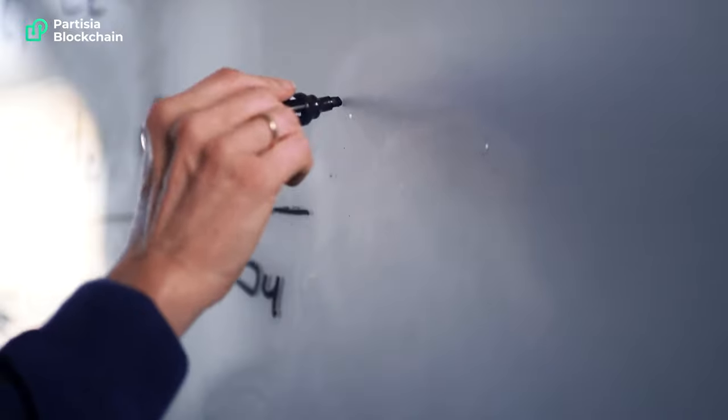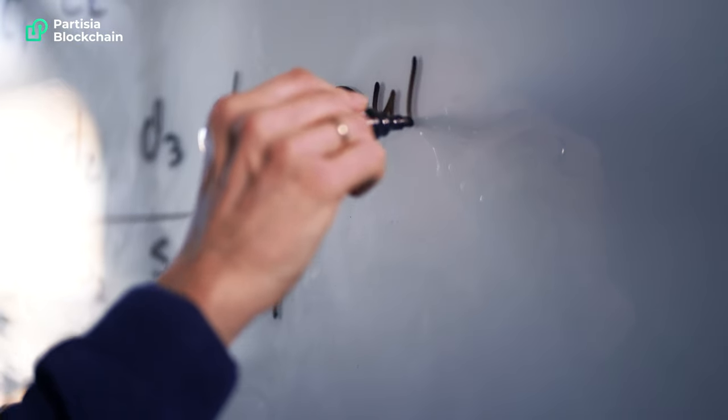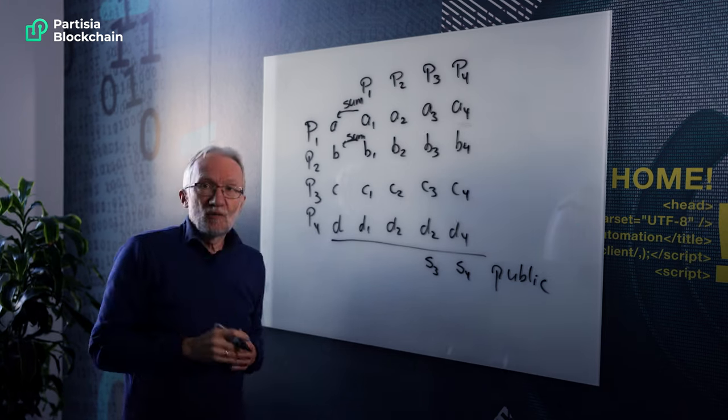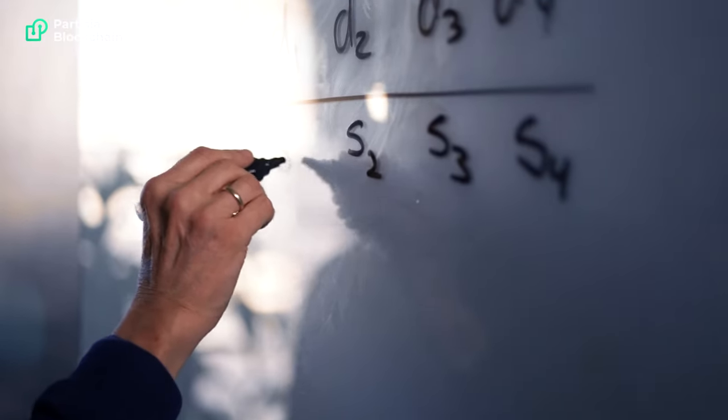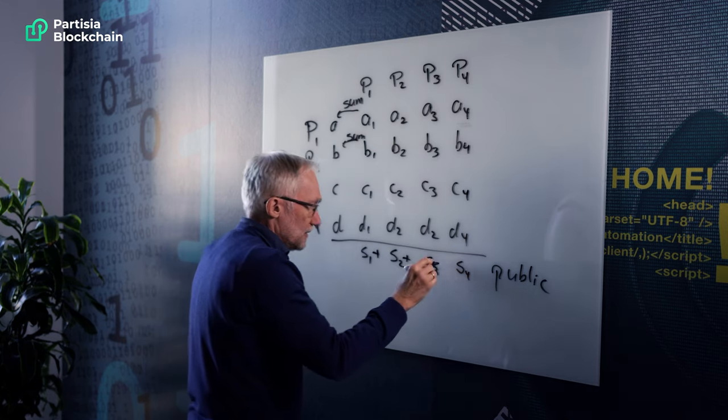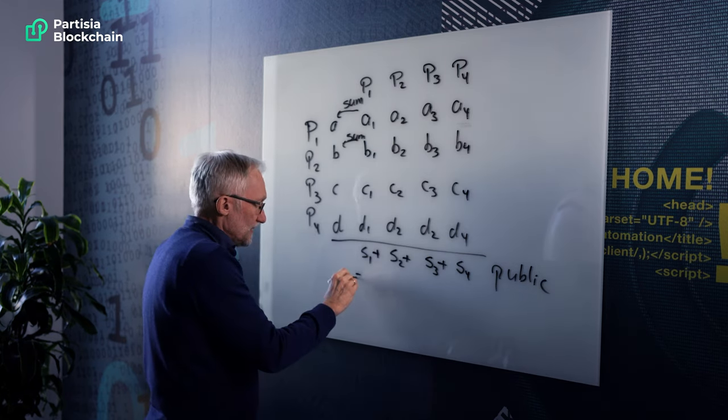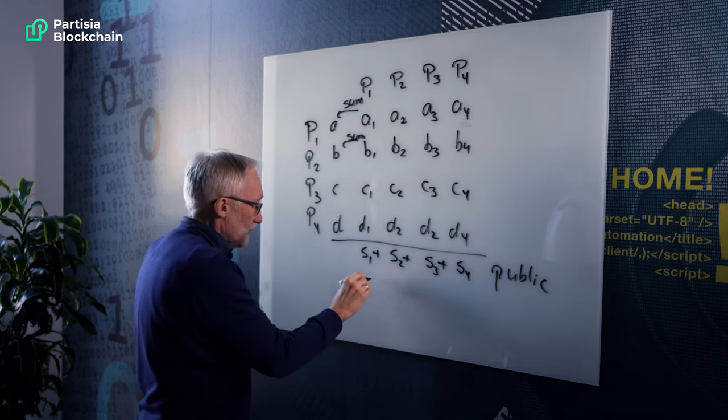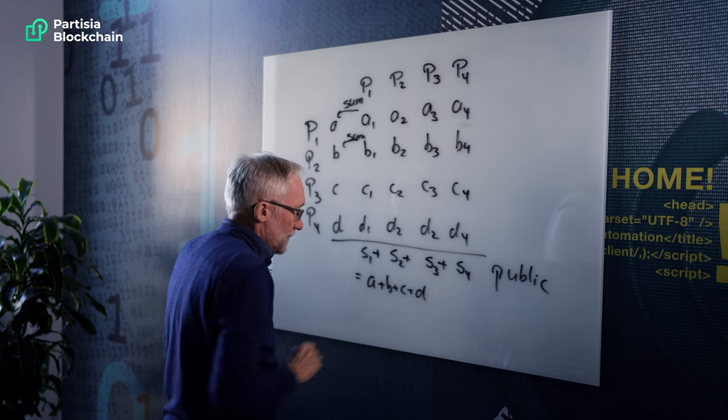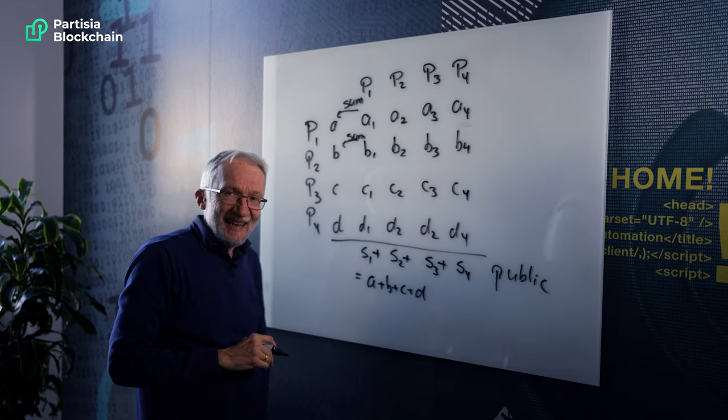And the idea is that we're going to make these sums public. So the fourth guy is going to tell everyone this is the sum I got. And the same thing with S2 and S1 here. So I claim if we sum up all these guys here, in fact what we're going to get is the sum of all the salaries. So that's going to be A plus B plus C plus D.